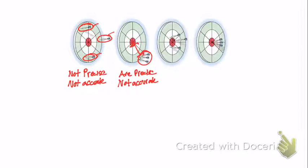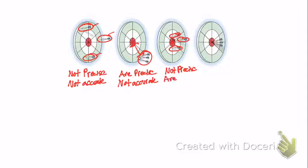The third target, again with three data points. What about the precision? They're a lot closer than the first target, but still pretty scattered, so I'll say still not precise. But are they accurate? The data averaged out would probably be very close to the actual bullseye value, so I'll say yes, they are accurate.